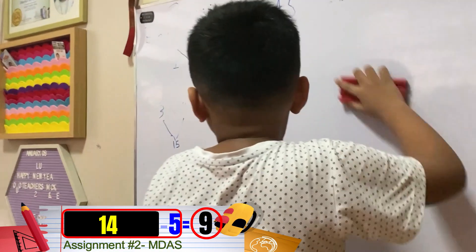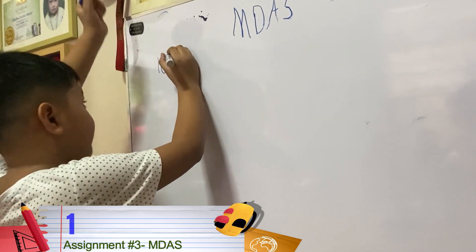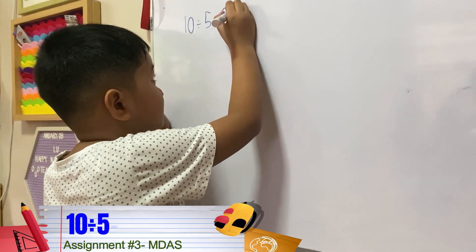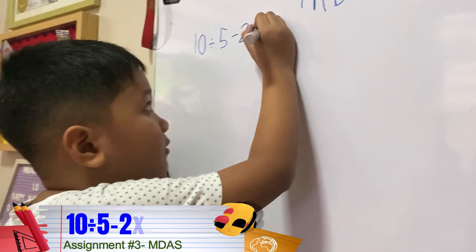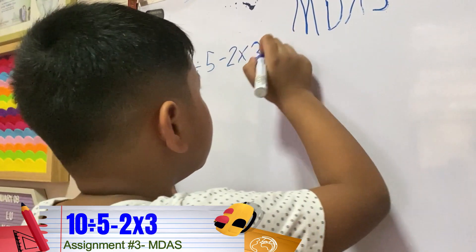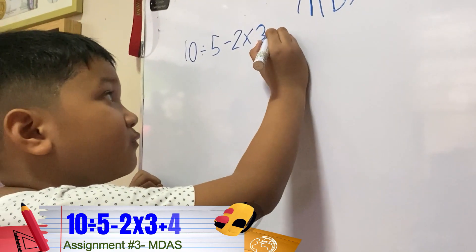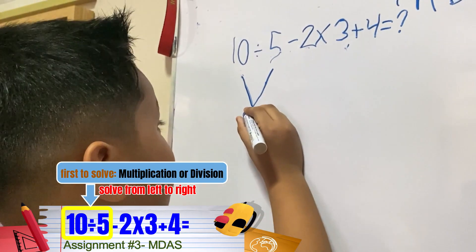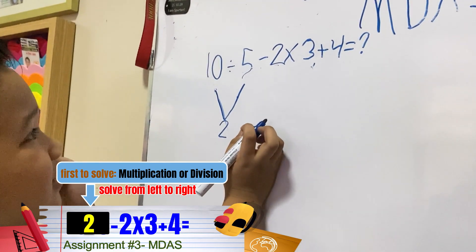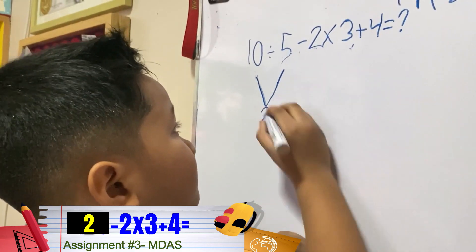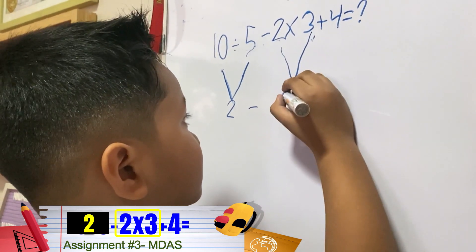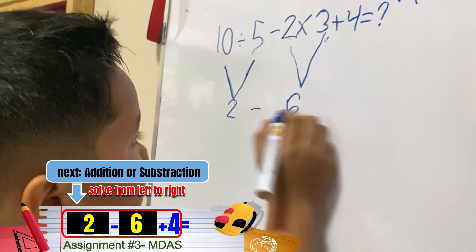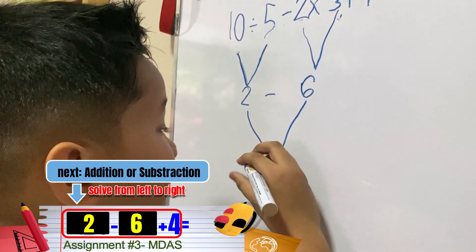Let's proceed to number 3. 10 divided by 5 minus 2 times 3. 10 divided by 5 equals 2. The result equals negative 4.